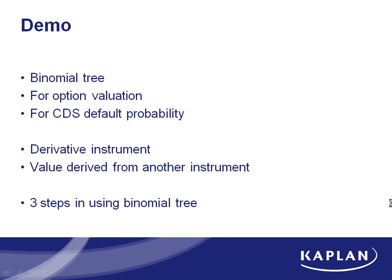Quick background: we're doing binomial tree, which you see in level two normally for derivatives. There are three or four main ways to price them. One is analytical — just a pure formula, you have the Black-Scholes. Then you have Monte Carlo, where you set up the system and run it many many times and see what the average is. And the last is the binomial tree.